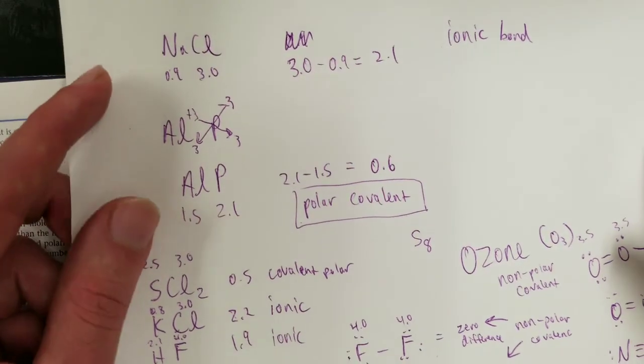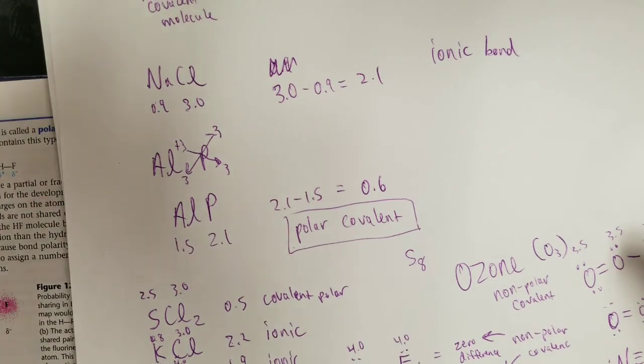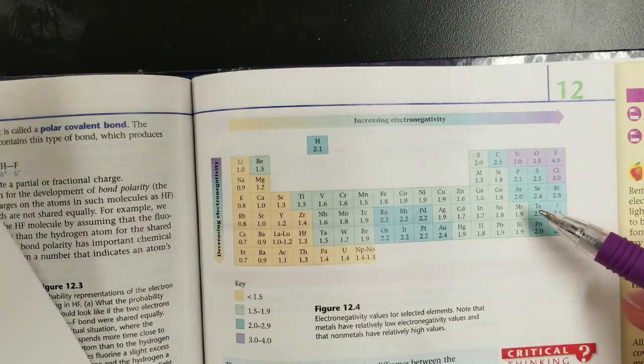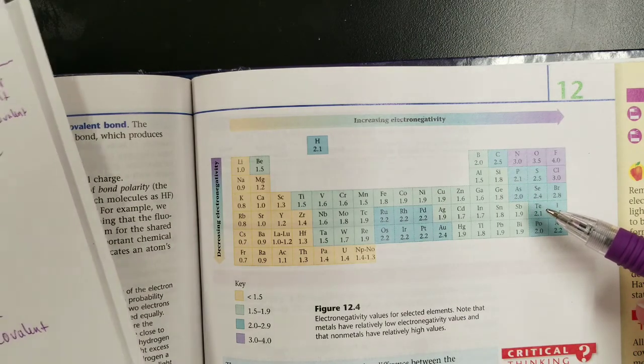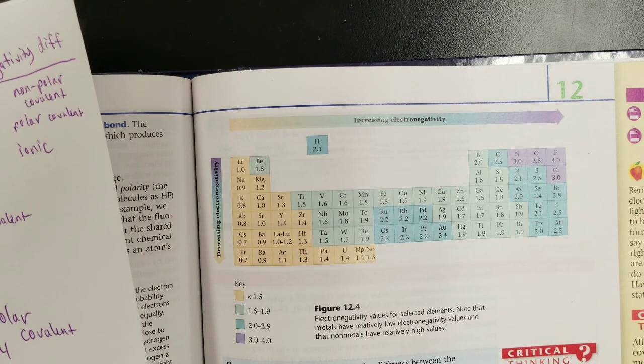All right, so I think that should give a pretty good introduction to determining the type of bonds using this table of electronegativity values. That should take care of it. Happy studies.